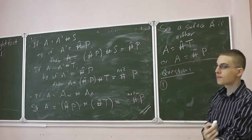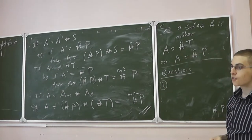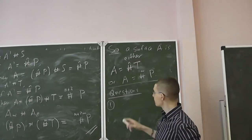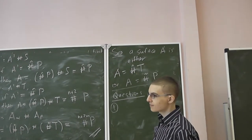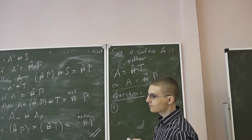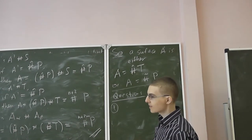The first question is: if we're given a surface, if it's orientable, then it's of the first type; if not, then it's of the second.